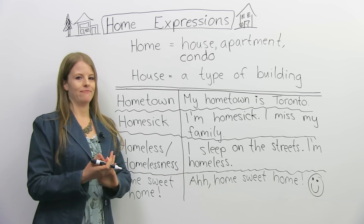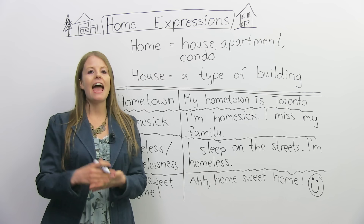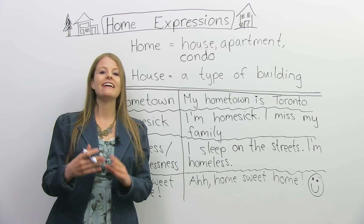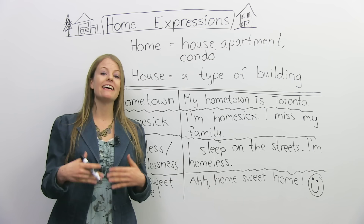There is a little bit of a difference. A home means a house, an apartment, it can mean a condo — it can be any place a person lives. So if you ever watched the TV show Sesame Street, there was a character, Oscar the Grouch, whose home was in a garbage can. It's not a house, but it's his home because he lives there.